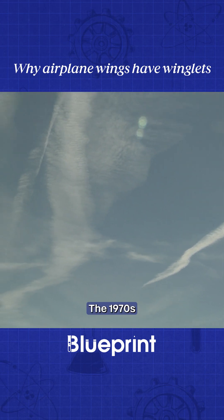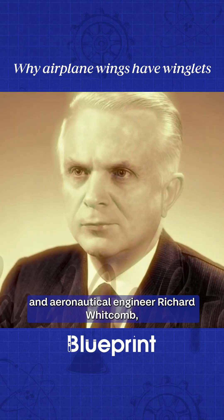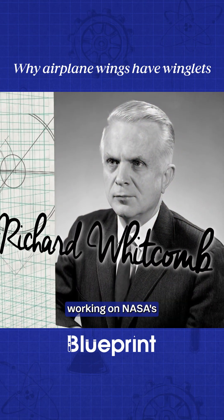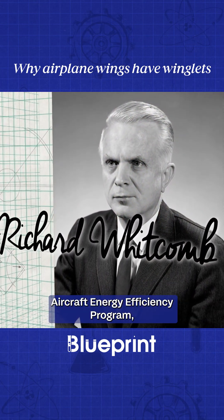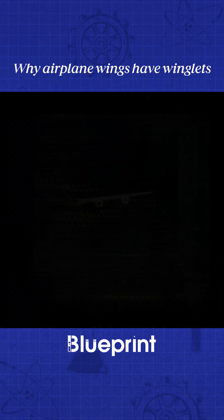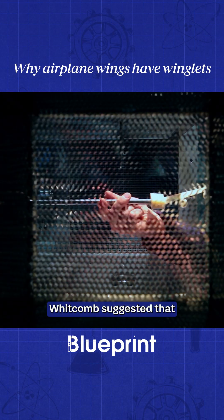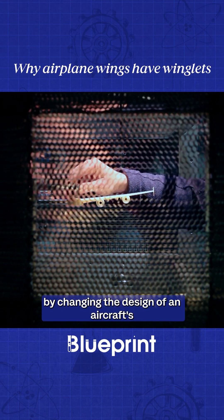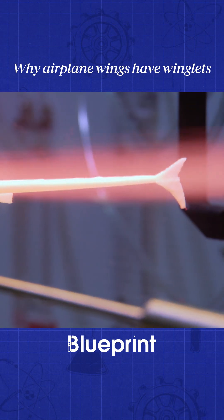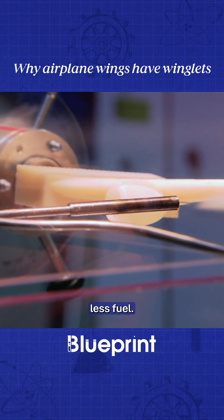The 1970s fuel crisis meant a solution was needed, and aeronautical engineer Richard Whitcomb, working on NASA's aircraft energy efficiency programme, found one. Whitcomb suggested that by changing the design of an aircraft's wingtips into vertical winglets, they would create less drag and burn less fuel.